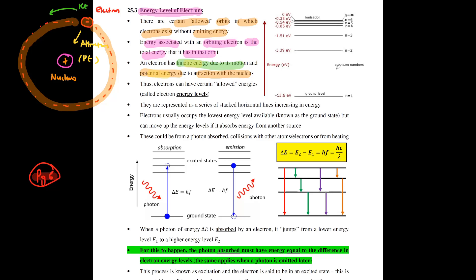For the case where you have electrons orbiting around your nucleus and there are certain allowed orbits in which they can exist, it follows that electrons have certain allowed energy levels. These are called your electron energy levels. They are normally represented as a series of stacked horizontal lines that increase in energy — if you look at the diagram on the top right-hand corner, you see a series of lines that increase in energy upwards.